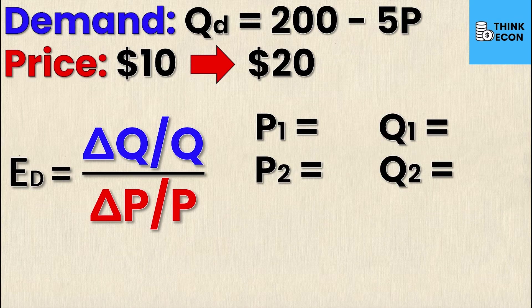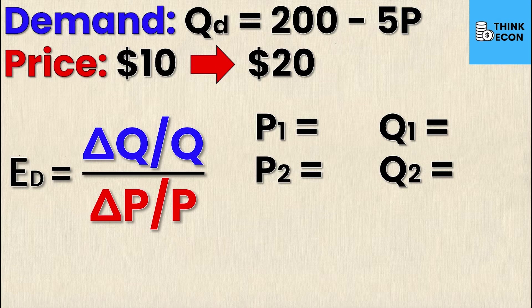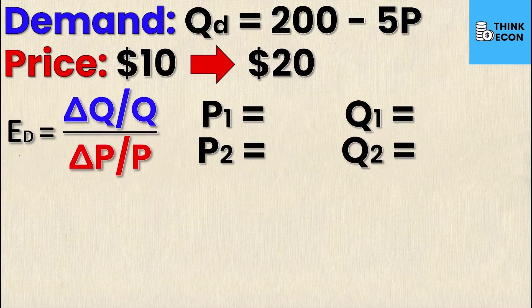That's just the old price, the new price, the old quantity, and the new quantity. These are the key values that we need to find in order to calculate the elasticity of demand.